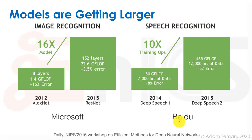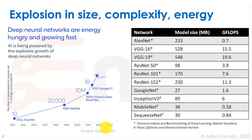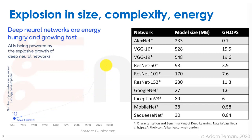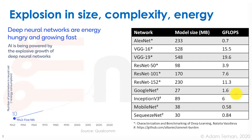For other tasks such as speaker recognition, we can see data from Baidu, and between Deep Speech 1 and Deep Speech 2, we had a 10x increase in the training operations needed. There's an explosion in size, complexity, and energy. We have a nice graph from Qualcomm showing the increase in the number of parameters in neural nets, as well as model size in megabytes and gigaflops needed.